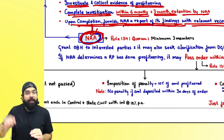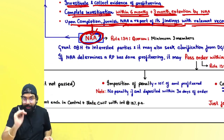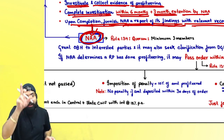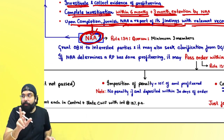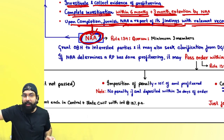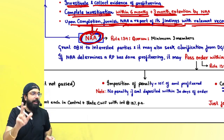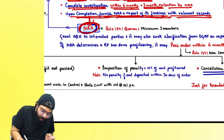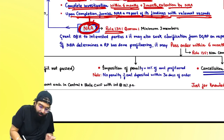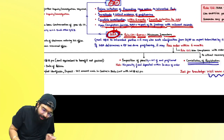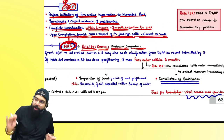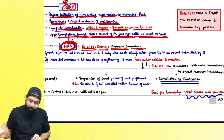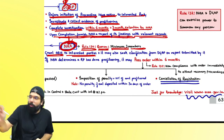Finally, the report comes to the National Anti-Profiteering Authority. The flow is: for national complaints — standing committee, then DGAP, then NAA. For local complaints — state-level screening committee, then standing committee, then DGAP, then NAA. Under Rule 134, the quorum of the National Anti-Profiteering Authority is a minimum of three members for a meeting or decision.